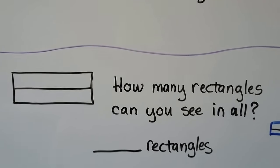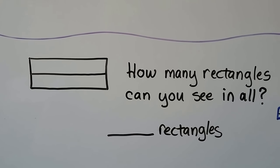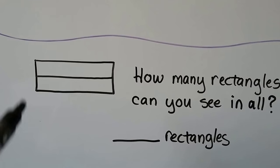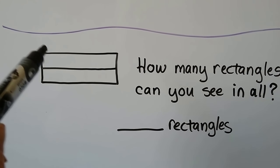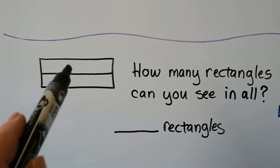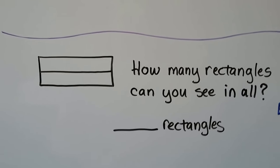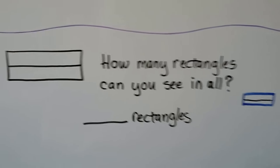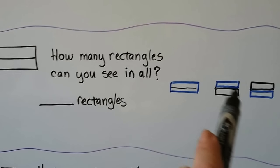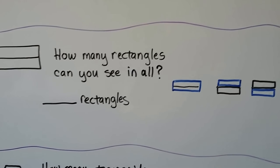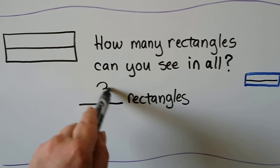So how many rectangles can you see in all? Do you see the one big one, and then this one on the top and this one on the bottom? That's three. We have one big rectangle, the rectangle on the top, and the rectangle on the bottom — three rectangles.